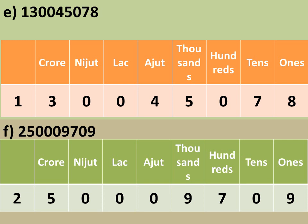So when we do the place value, counting from the right, we can say this number is 13 crore 45,078. Next, number f: 25,009,709. Ones is 9, tens is 0, hundreds is 7, thousands is 9, ten-thousands is 0, lakhs is 0, crores is 5, giving 25 crore 9,709.